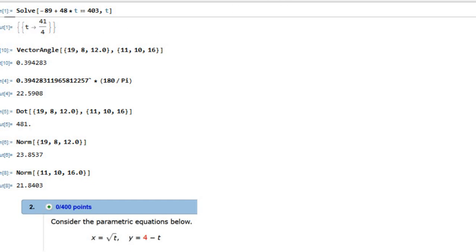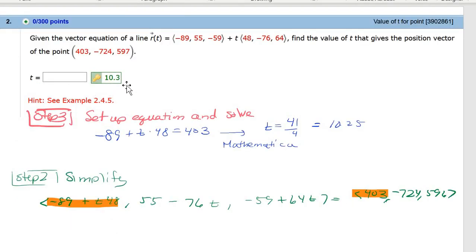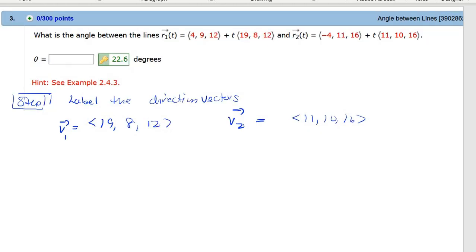And it's 41 over 4, which turns out to be 10.25. And so 10.25 rounds up to 10.3. And that's the answer you see up here. All right, I'm going to do this one quickly, too.